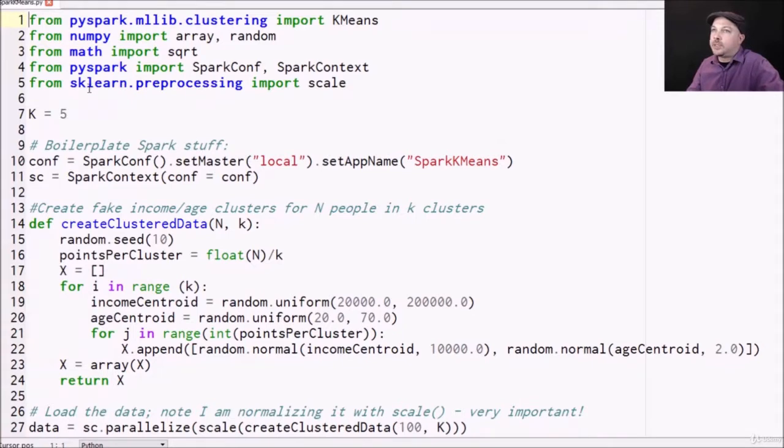Some boilerplate stuff. We're going to import the k-means package from the clustering MLLib package. We're going to import array and random from NumPy, because again, we're free to use whatever we want. This is a Python script at the end of the day.